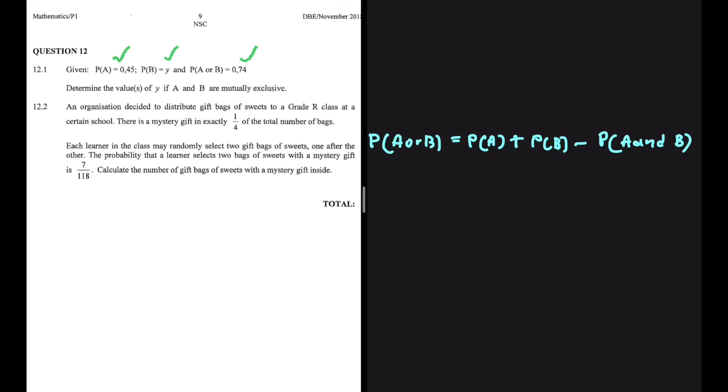So what does it mean when two events are mutually exclusive? It simply means that they cannot occur at the same time. So the probability of A and B is zero.